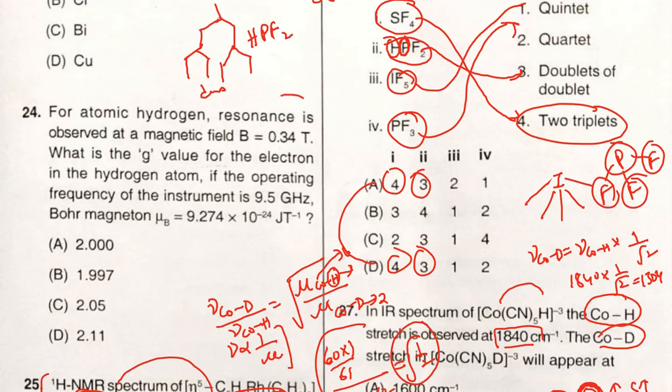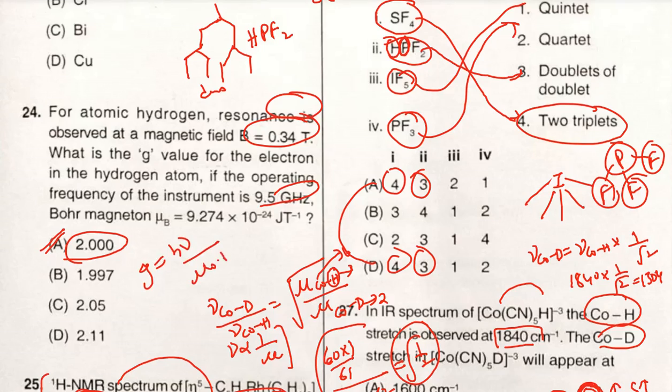For atomic hydrogen, the resonance is absorbed at a magnetic field B = 0.34 tesla. What is the g value for the electron in the hydrogen atom if the operating frequency of the instrument is 9.5 gigahertz? Bohr magneton is given. So we need to find the g value. The g value is approximately 2 here, so option A is the correct answer.